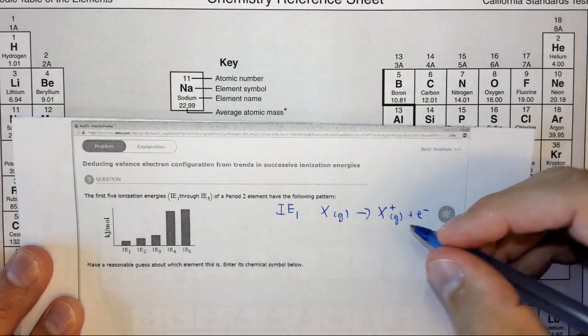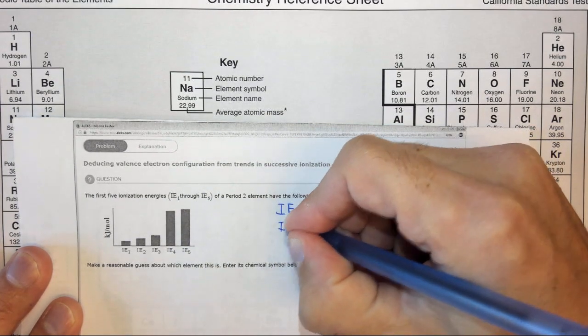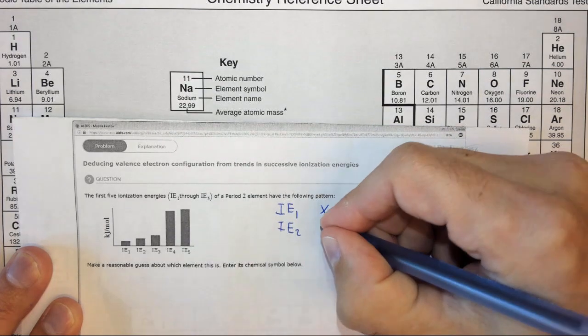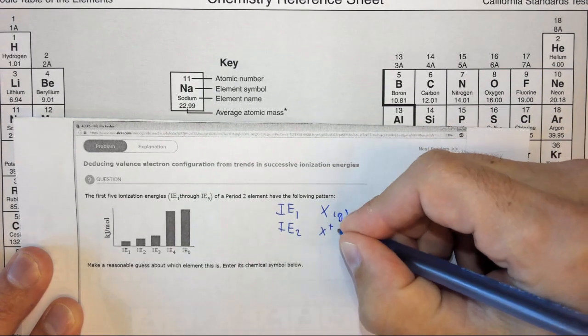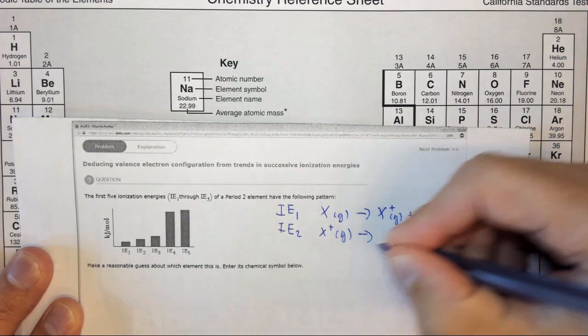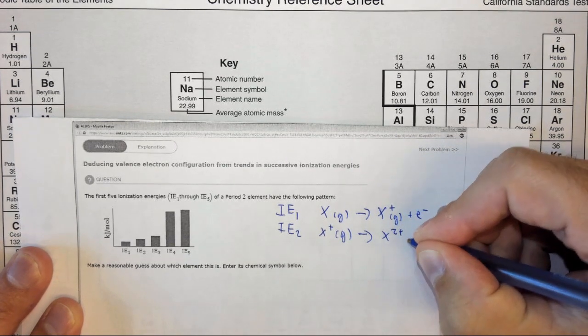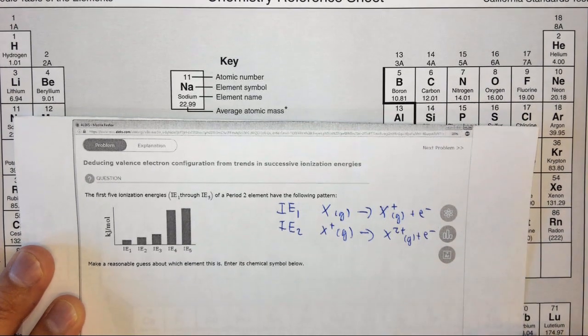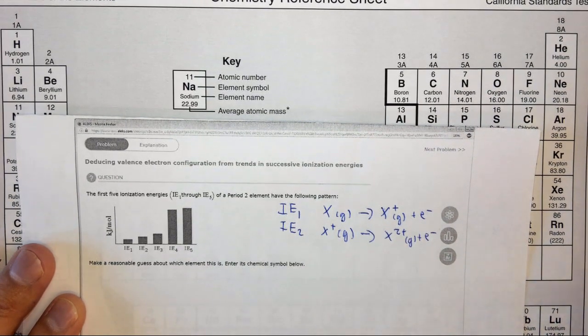It does have to be in the gas phase. The second ionization energy is the energy to take a second electron away. So X already had an electron taken away, so it's X plus in the gas phase yields X2 plus in the gas phase plus an electron. So this is what ionization energy is.